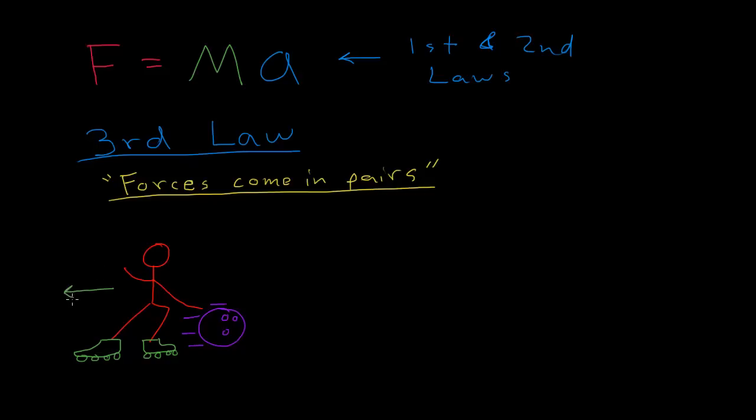The bowling ball is going forwards and I'm going backwards. So this is one example where forces come in pairs. I'm putting a force on the bowling ball and then the bowling ball is actually putting a force on me.